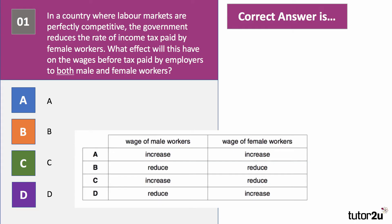Question number one. In a country where labour markets are perfectly competitive, the government reduces the rate of income tax paid by female workers. What effect will this have on the wages before tax paid by employers to both male and female workers? Press the pause button, have a go at the question. Come back in a few seconds when you want the answer.